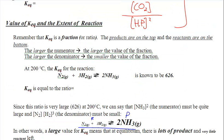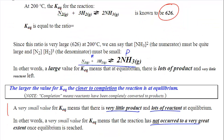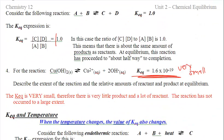Now that we can write out the expression, what does it mean? Keq will have some value — it can be very large or very small. It's always a ratio of products over reactants. If you have a huge number like 626, you have a huge amount of products, which means you're very close to completion. If your number is very small, it means you have very little product and mostly reactants, meaning the reaction has barely proceeded. The larger the number, the more products; the smaller the number, the more reactants.